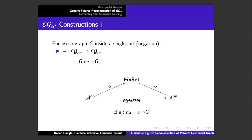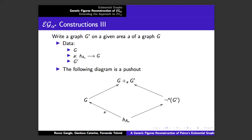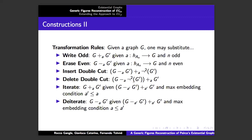Once we have the architecture of EG alpha star, it's quite straightforward elementary category theory to define operations like negation — a functor from EG alpha star into itself that takes a graph and draws a cut around it. Given a subgraph G prime on an area A of a graph G, specifiable in terms of generic figures, we can take the graph that erases G prime from that area. Writing an arbitrary graph G prime once we pick an area A on a given graph G gives an interesting kind of pushout, which lets us rewrite the transformation rules in a quasi-algebraic way.